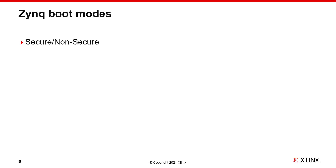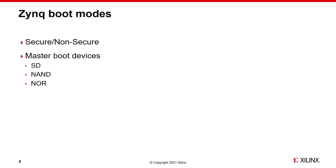The boot ROM can do secure boot with authenticated and encrypted FSBL and bitstreams, or non-secure boot. Secure vs. non-secure is defined by the user in the boot ROM header. The boot device is selected by the boot mode strapping pins. When the system boots from a flash memory device, it is considered a master mode boot. The supported master boot devices are SD, NAND, NOR, and QuadSPI.